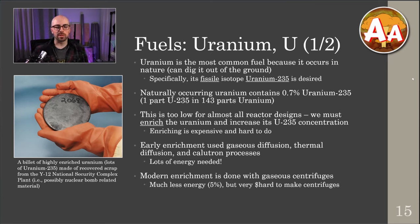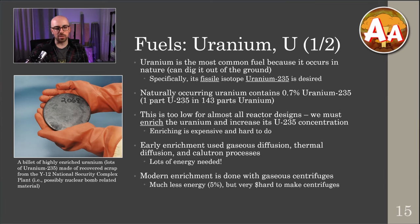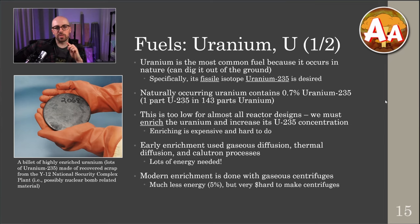The fissile isotope is uranium-235. Natural uranium has very little uranium-235 — about one part in 143. That's too low an enrichment for most reactor designs, so most often we have to enrich uranium. Enriching is expensive and hard to do. Early enrichment used gaseous diffusion, thermal diffusion, and calutron processes during World War II and the Manhattan Project, and then it moved primarily to gaseous diffusion, which is very energy intensive.